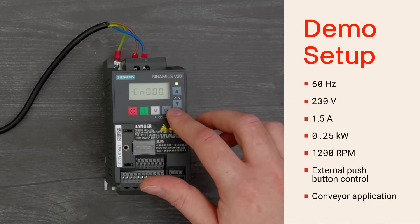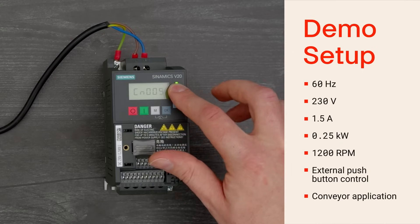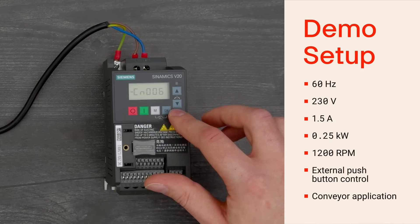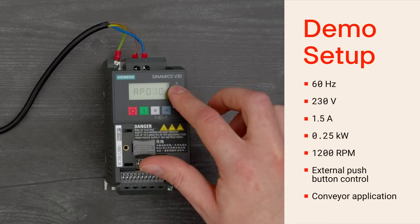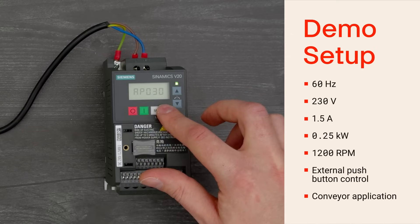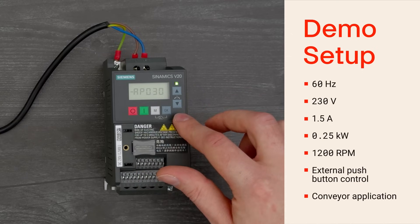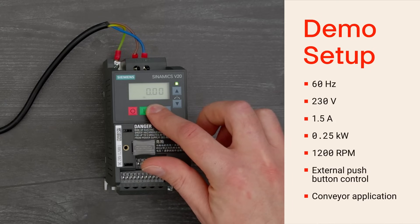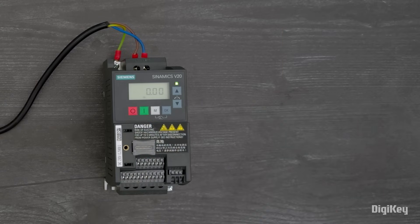Next, you can select from connection and application macros that configure a set of parameters for different control methods, such as controlling from an external push button, or the universal serial interface protocol or Modbus RTU interface, and application macros such as a simple pump or a conveyor belt. For either macro, you can select the closest match and fine-tune parameters as needed to save commissioning time and get your motors turning sooner. Thanks for watching!